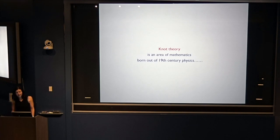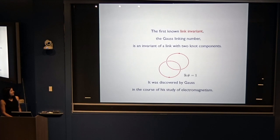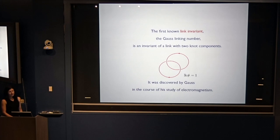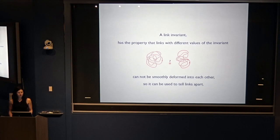Knot theory is an area of mathematics born out of 19th century physics. The first known link invariant, the Gauss linking number, is an invariant of a link with two knot components. It was discovered by Gauss in the course of his study of electromagnetism. A link invariant has the property that links with different invariants cannot be smoothly deformed into each other, so it can be used to tell links apart.